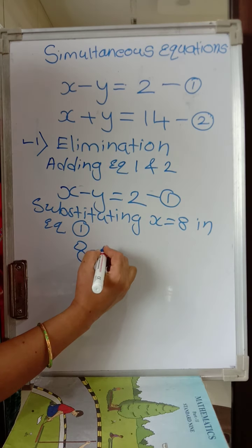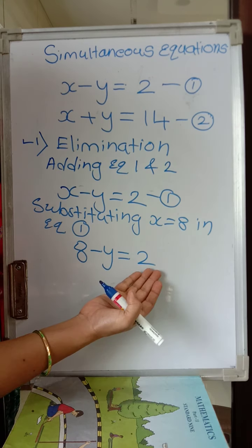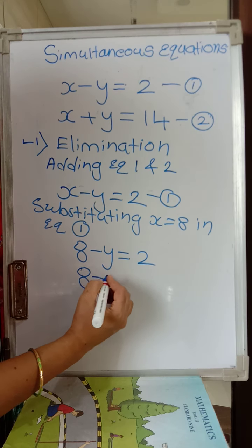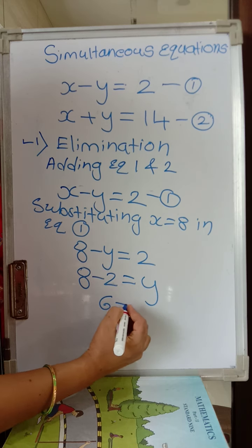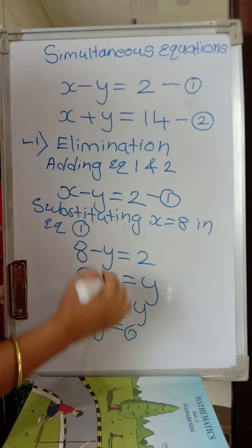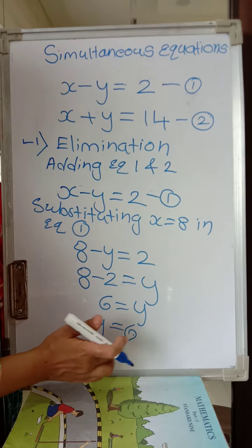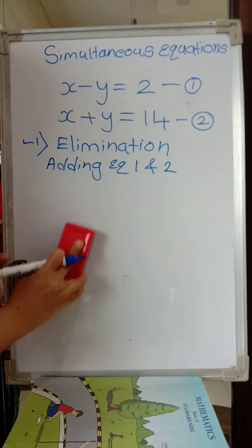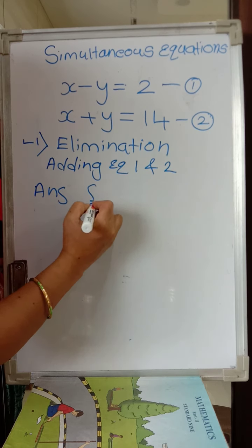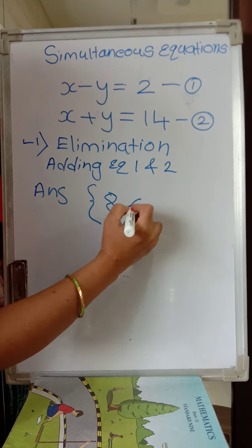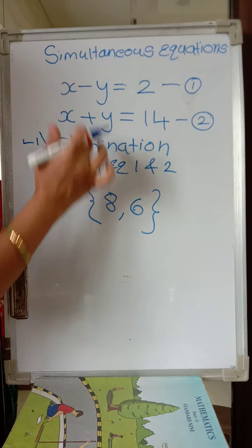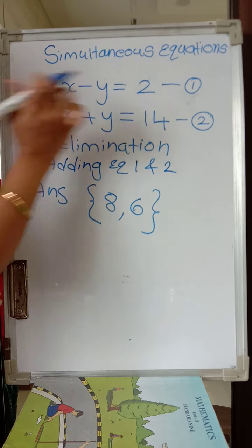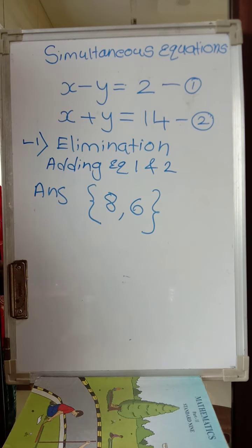Taking y to the other side: minus y becomes plus y, and 2 goes to that side as minus 2, giving 8 minus 2 equals y, so y equals 6. We got x equals 8 and y equals 6. The solution is written as 8 comma 6. Substituting these values: in equation 1, 8 minus 6 equals 2 ✓; in equation 2, 8 plus 6 equals 14 ✓.